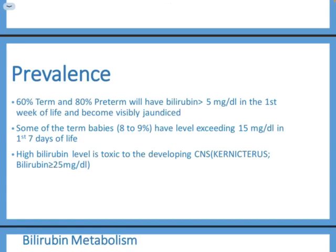In a term infant, physiological jaundice can rarely exceed 15 mg/dL. If it exceeds this number, you must look for an underlying pathological cause. Bilirubin is divided into direct and indirect types. The problem is mainly with indirect bilirubin, which can cross the blood-brain barrier and cause neurological problems — what we call kernicterus — especially when bilirubin exceeds 25 mg/dL. Kids with kernicterus end up with permanent neurological sequelae like spasticity and movement disorders.